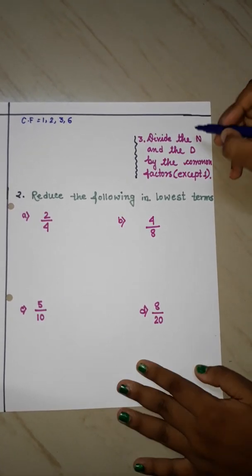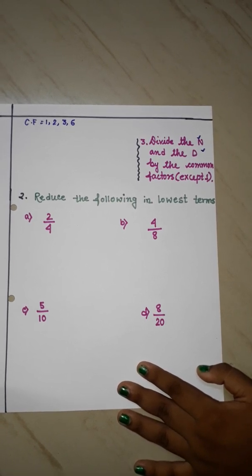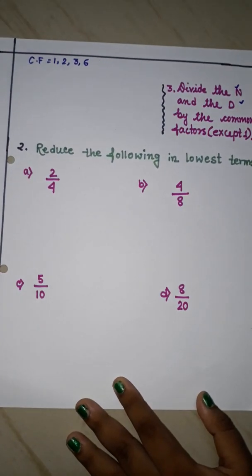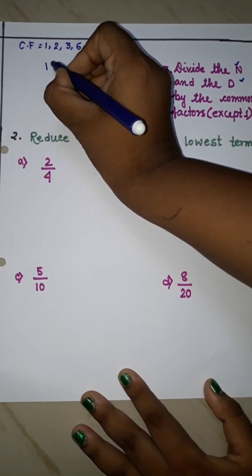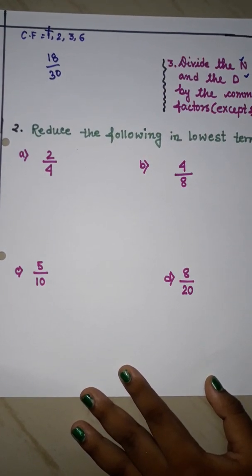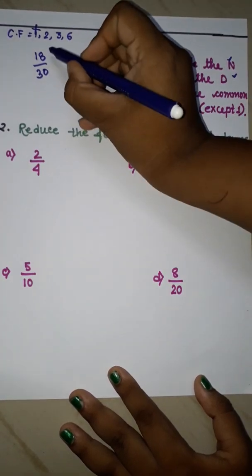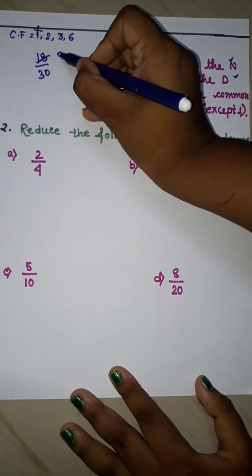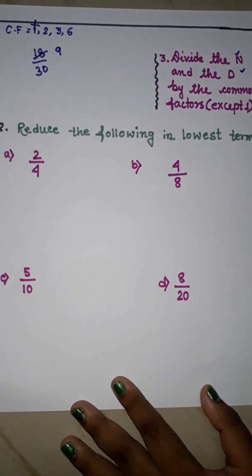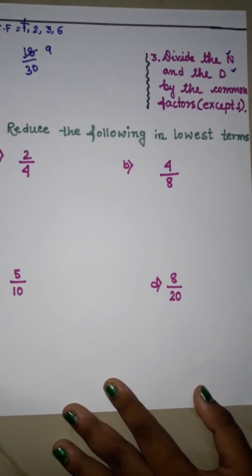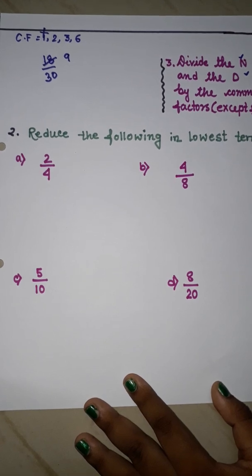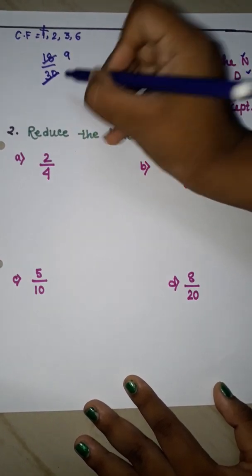Now the last and very important main point: divide the numerator and the denominator by the common factors except 1. So we will not take 1; we will take 2 first. If we divide 18 by 2, we get 9. If we divide 30 by 2, we get 15.